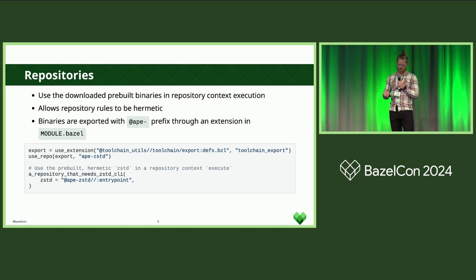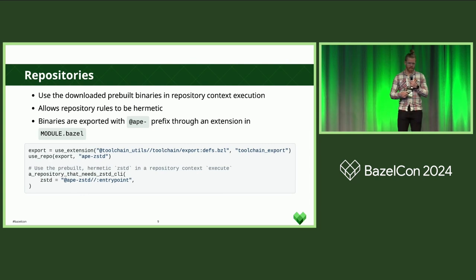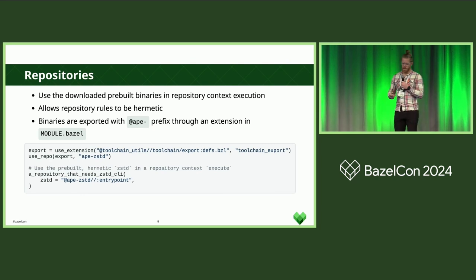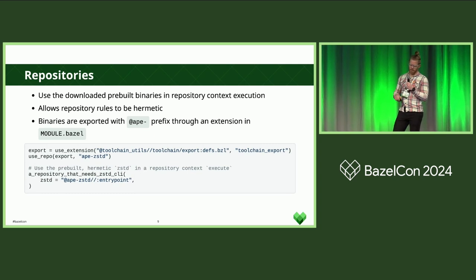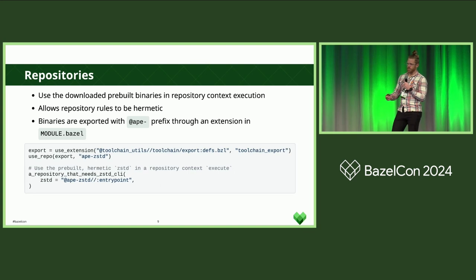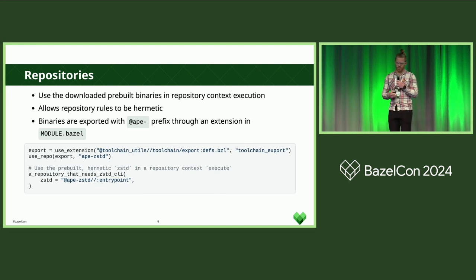Getting back to what we said at the start: you need to have a pre-built so you can use it in a repository rule. The APE module uses an extension to export different binaries as targets usable within repository rules. For example, if you need to extract a downloaded tarball that uses ZStandard compression, and Python does not have ZStandard built in, you can use a snippet of code to get ZStandard, pass it into the repository rule, and use it to decompress and unpack the tarball. This allows you to be hermetic in both repository rules and your action graph.